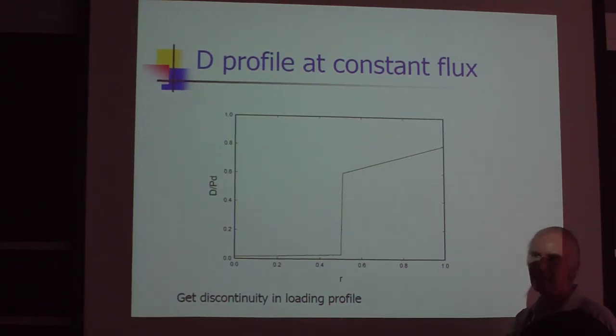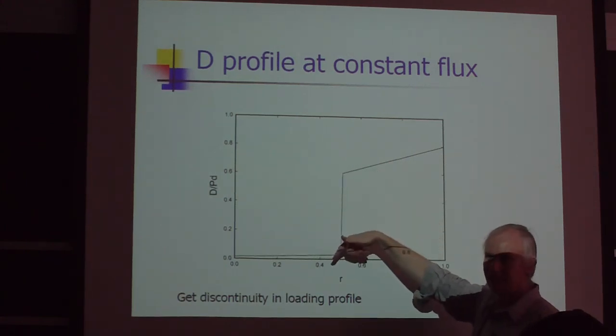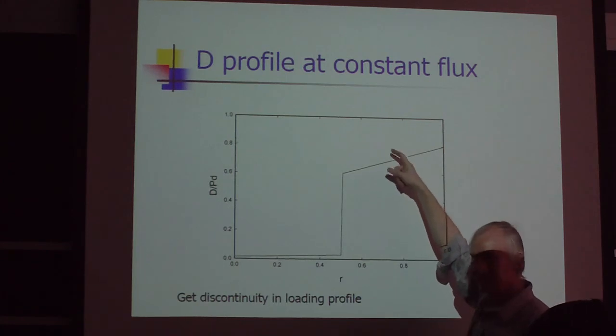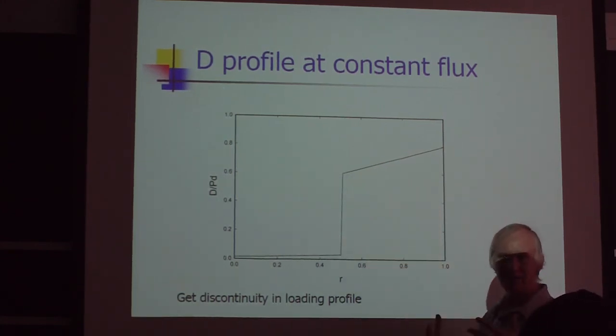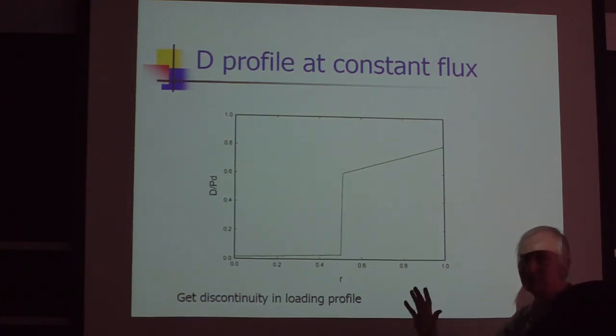Now if you've got a discontinuity, if you've got a miscibility gap region where you've got a very low diffusion coefficient, you basically pick up a discontinuity in the loading. And one of the bad things about having such a discontinuity is that if you've got a 10% volume change between here and here, you've got regions with different volumes. The strains are very different on the two sides of this diffusion boundary.